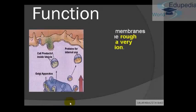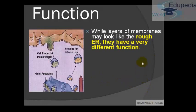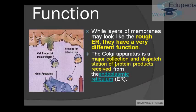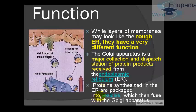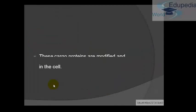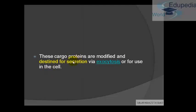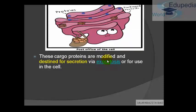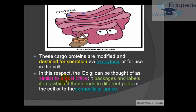Moving to the function — how does the Golgi body function? The endoplasmic reticulum and Golgi bodies both look very similar, but they don't work similarly; they have very different functions. The Golgi apparatus is a major collection and dispatch station of proteins. These proteins are received from the endoplasmic reticulum. The proteins that are synthesized are packaged in vesicles, which then fuse with the Golgi apparatus for further processing. The carbo-proteins are modified and targeted for secretion via exocytosis. In this respect, the Golgi can be thought of as similar to a post office — it packages the proteins, labels them, and sends them to different parts of the cell or the extracellular space. So basically, the Golgi is the post office of the cell.